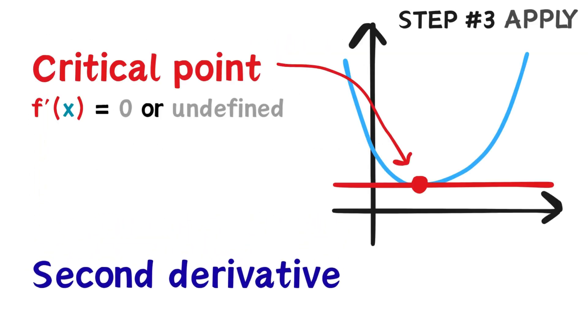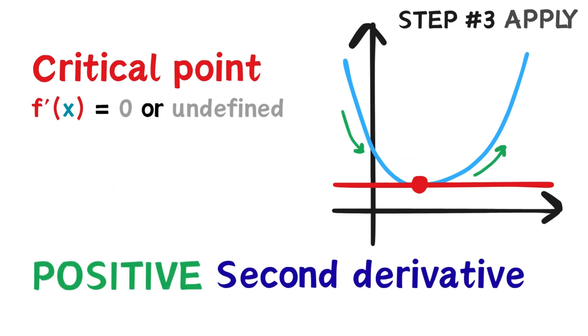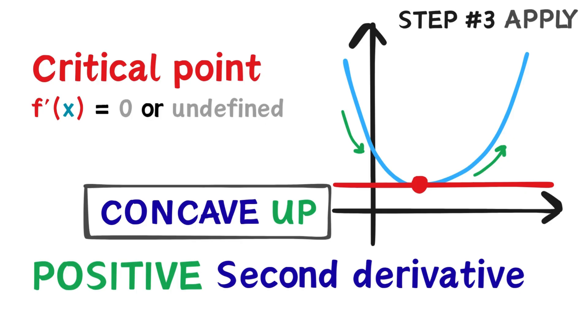After finding critical points using the first derivative, and of course assuming that the critical points exist on the function, we can determine whether they are maxima or minima using the second derivative. If the second derivative is positive at the critical point, we know that at that point, the function is concave up, and the derivative, or the rate of change, is becoming more positive. So this tells us that the function values before the point and the function values after the point must be greater. We call that a minimum.